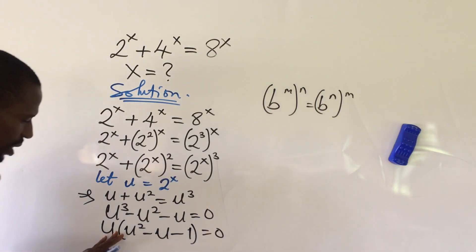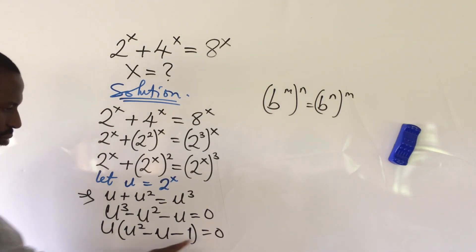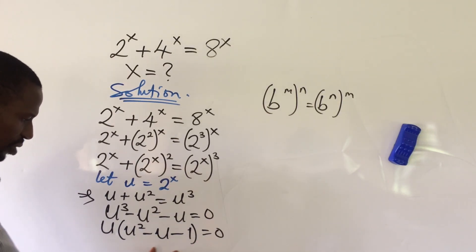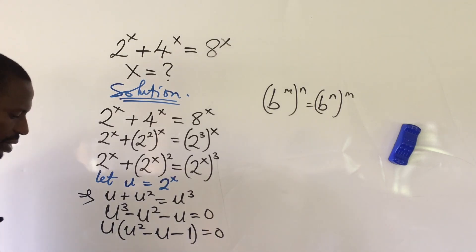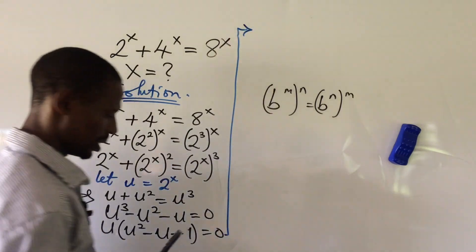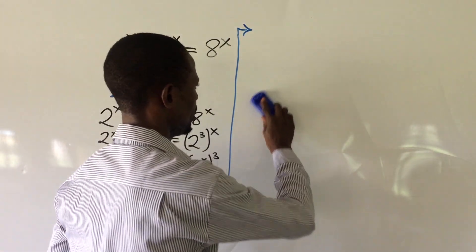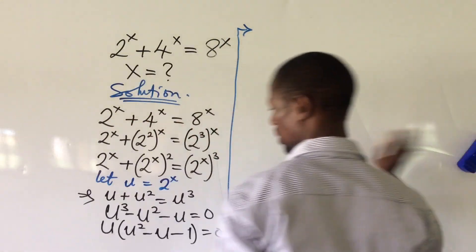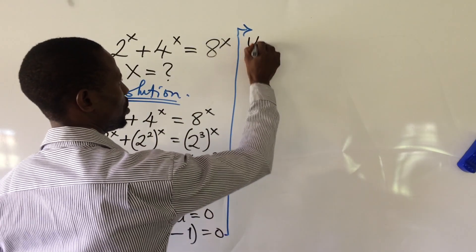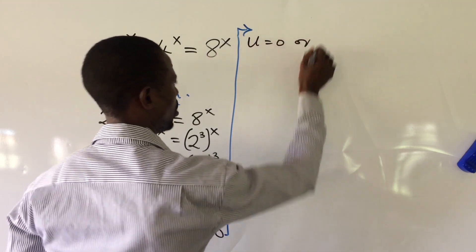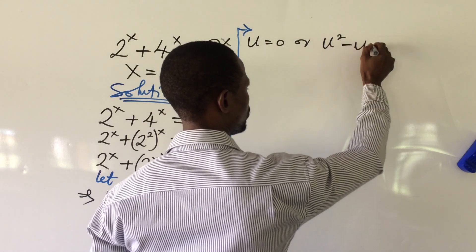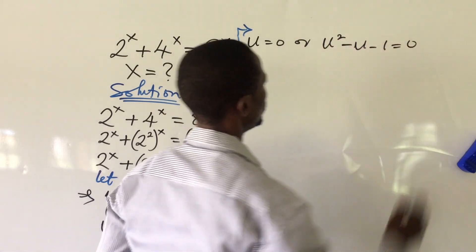We can factor out u from here. So if we do that, we get u times the quantity u squared minus u minus 1, equal to 0.